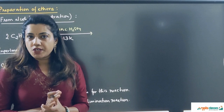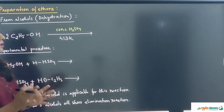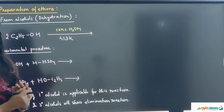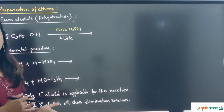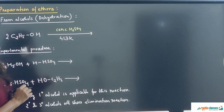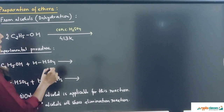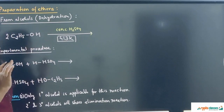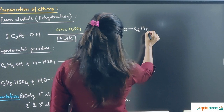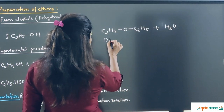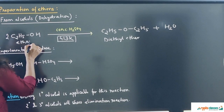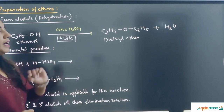After nomenclature, we come to the preparation of ethers. The first method is preparation from alcohols by dehydration. Dehydration means removal of water. We have already seen that ethers are called anhydrides of alcohols — when you remove water from alcohols you get ethers. The reaction: two molecules of ethanol treated with concentrated H₂SO₄ as a dehydrating agent at 413 K gives C₂H₅OC₂H₅ (diethyl ether) plus H₂O.